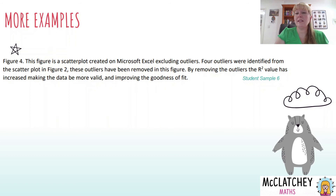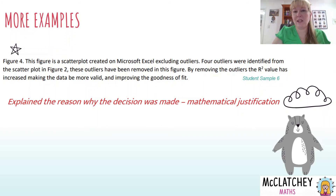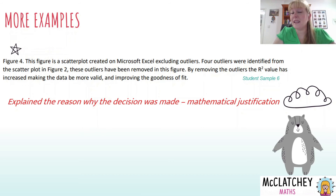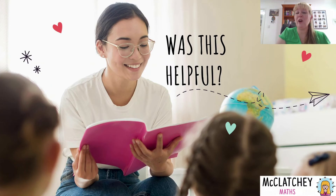Here's a good one: 'The figure is a scatter plot created excluding outliers. Four outliers were identified from the scatter plot. These were removed in this figure. By removing the outliers, the r-squared value was increased, making the data more valid and improving the goodness of fit.' They've explained why they made the decision to remove the outliers — that's a mathematical justification. Even if teachers might debate whether they should have removed the outliers, the student has still justified their decision with mathematical reasoning.